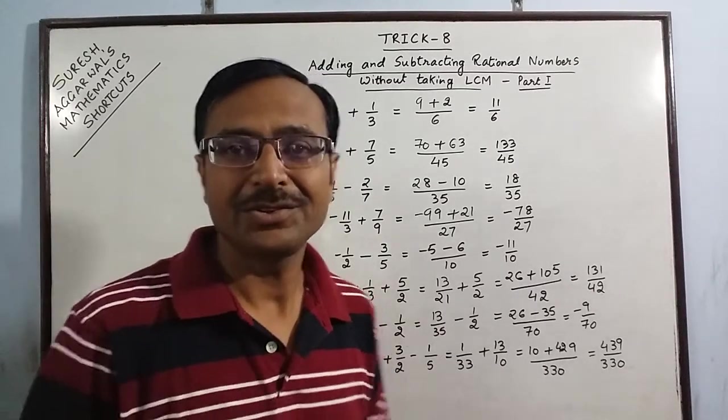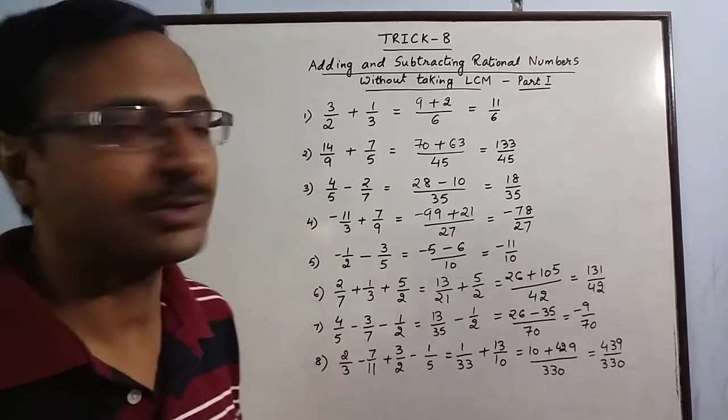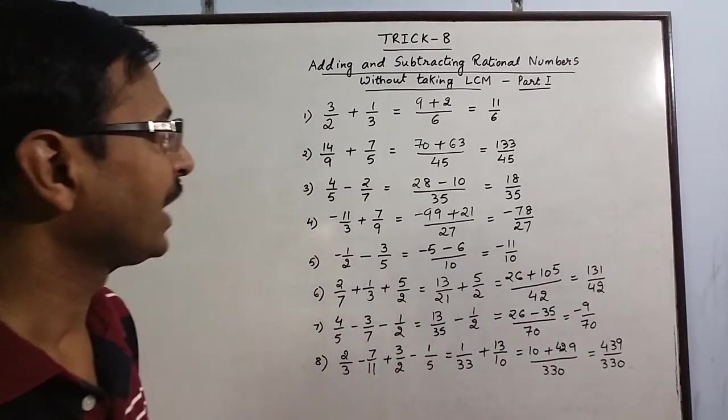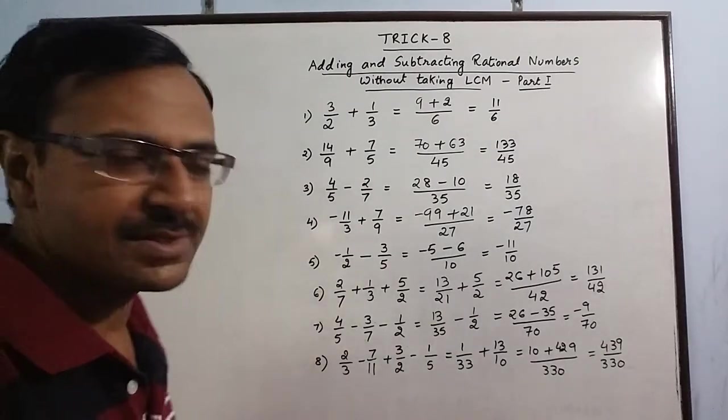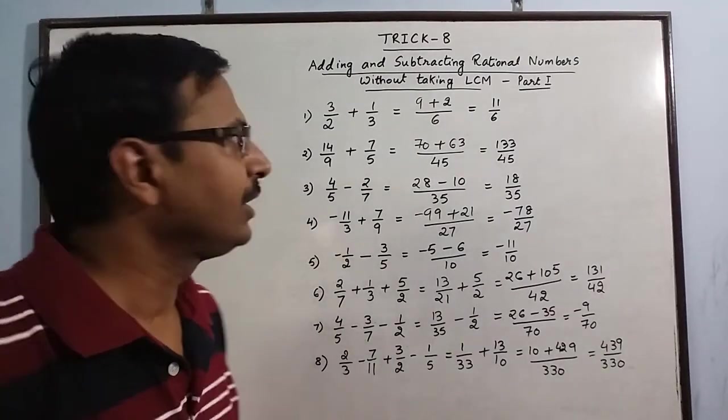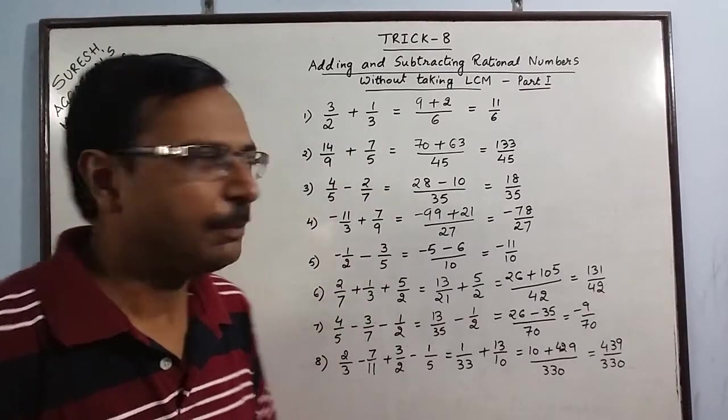Hello everyone, in trick number 8 which I posted concerning the addition and subtraction of rational numbers without taking LCM, I told you that all these examples belong to the category of the denominator not having any common factor.